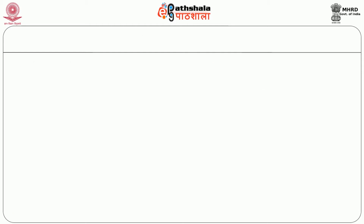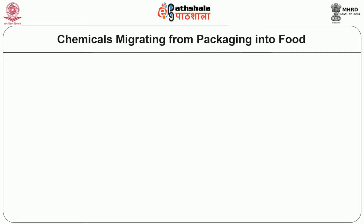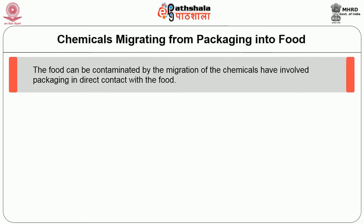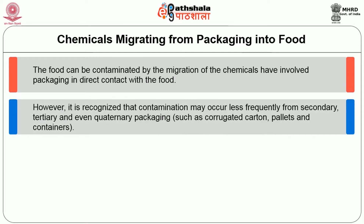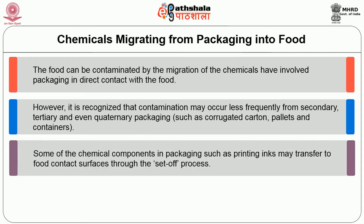Now we will see about chemicals migrating from packaging into food in detail. The food can be contaminated by migration of chemicals from packaging in direct contact with the food. However, it is recognized that contamination may occur less frequently from secondary, tertiary and even quaternary packaging such as corrugated carton, pallets and containers. Some of the chemical components in packaging such as printing inks may transfer to the food contact surfaces through the set-off process.